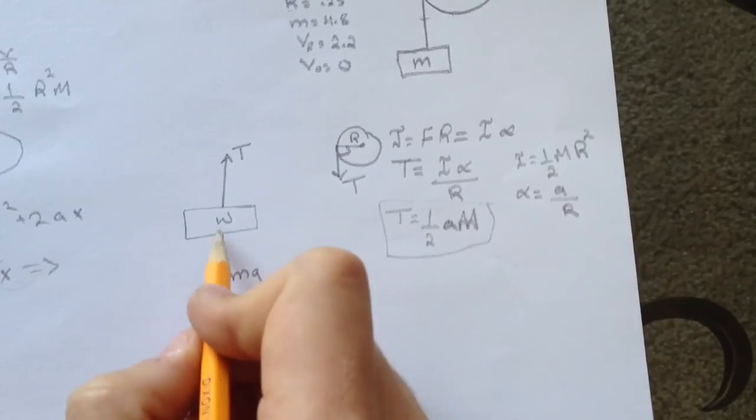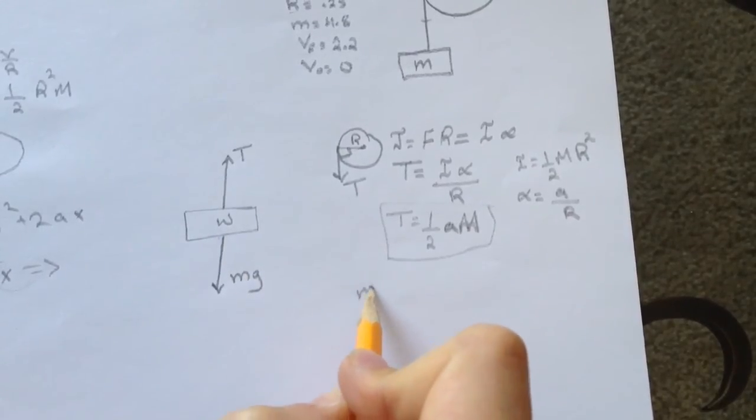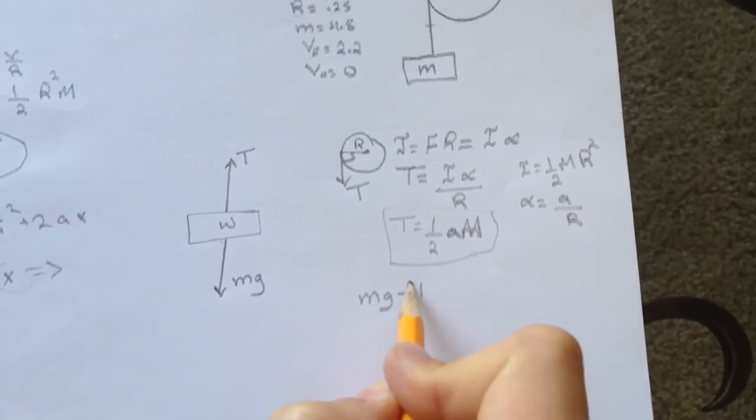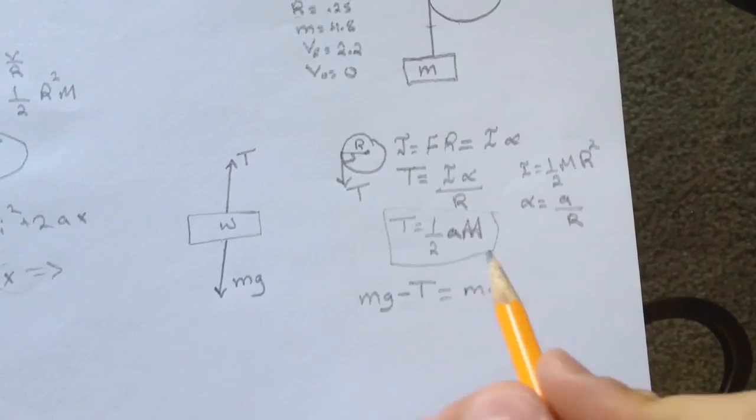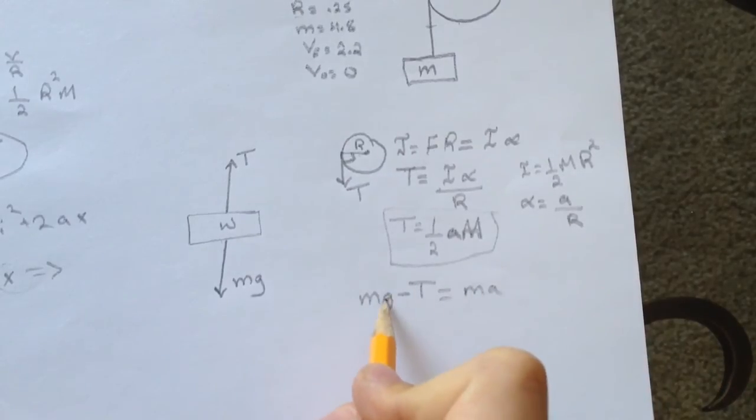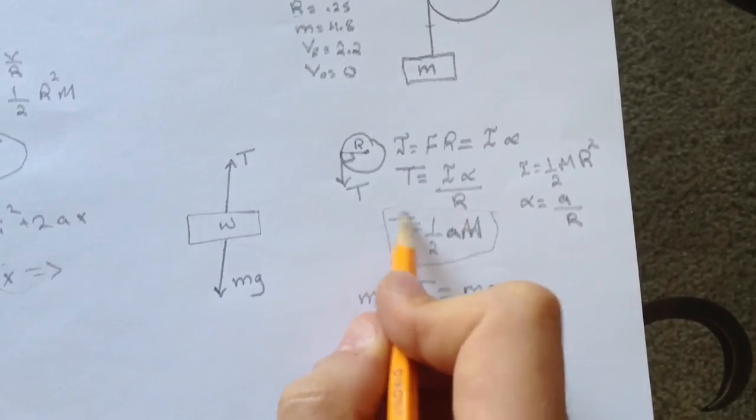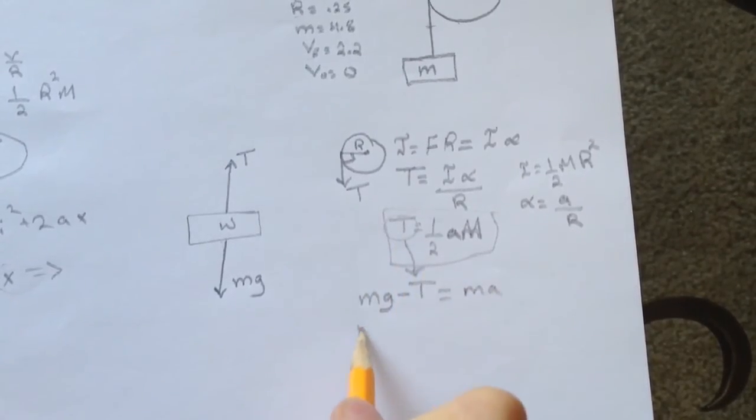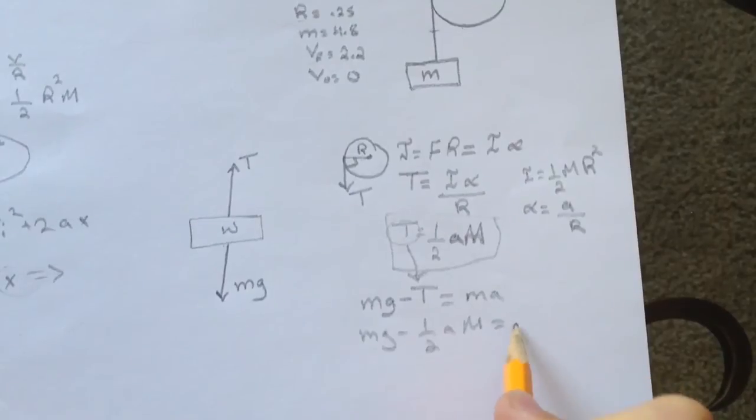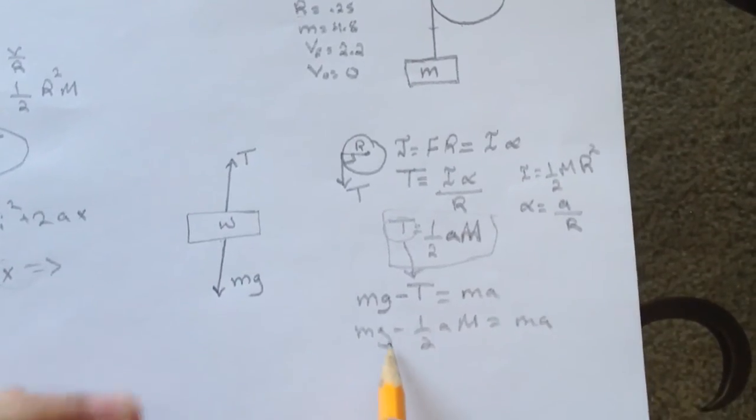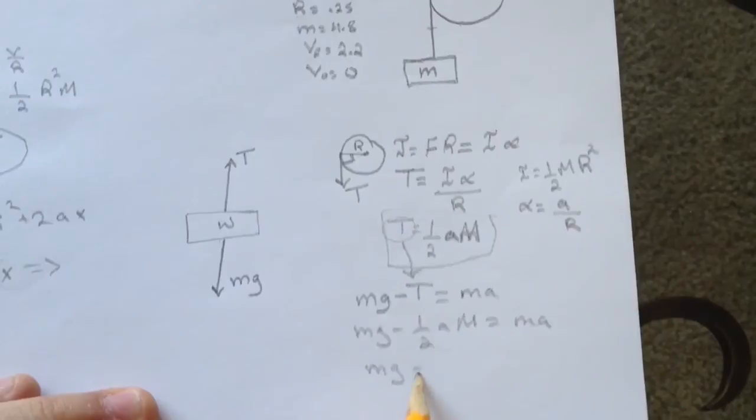For the weight, mg minus T equals ma, Newton's first law. Now substitute T, so mg minus half aM equals ma. Take this to the other side, so mg equals ma plus Ma over 2.